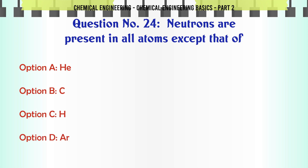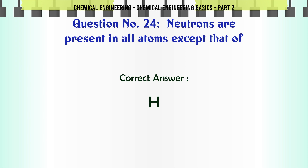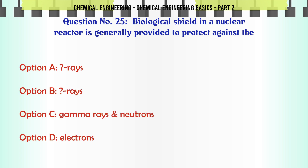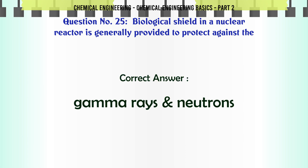Neutrons are present in all atoms except that of: a) He, b) C, c) H, d) Ar. The correct answer is: H. Biological shield in a nuclear reactor is generally provided to protect against: a) alpha rays, b) beta rays, c) gamma rays and neutrons, d) electrons. The correct answer is: gamma rays.